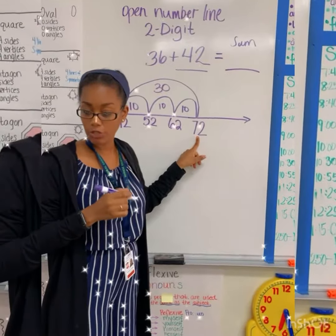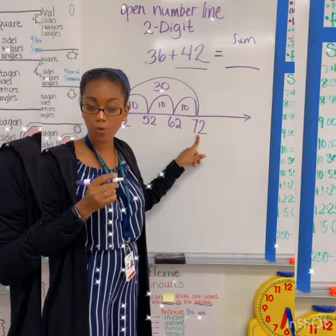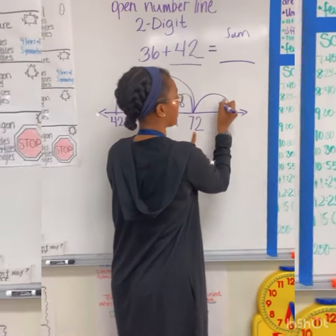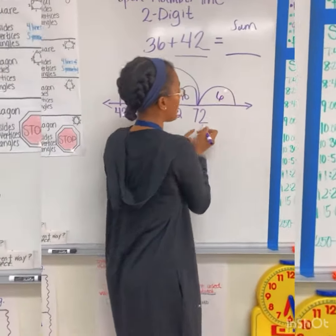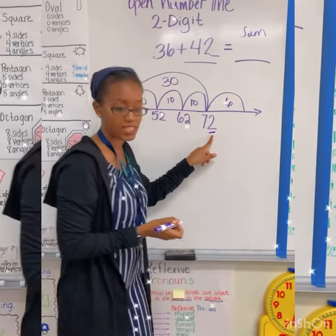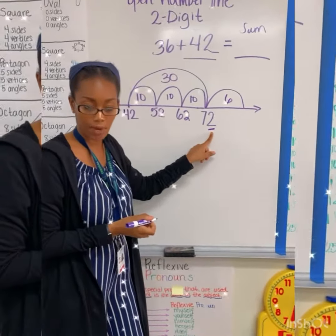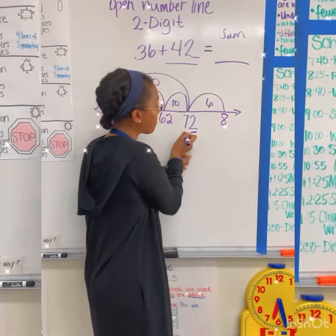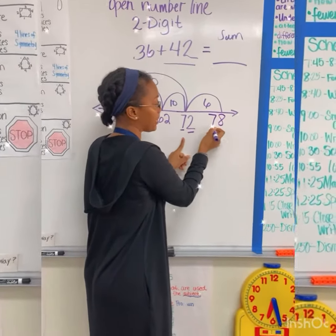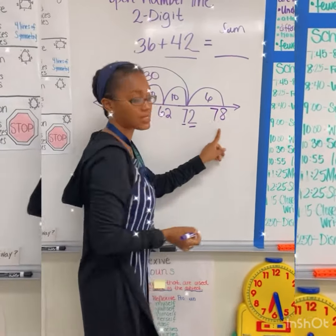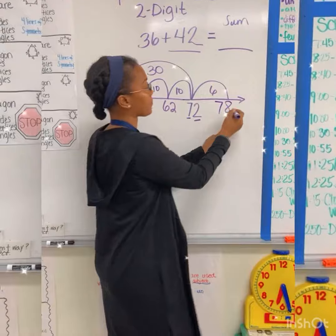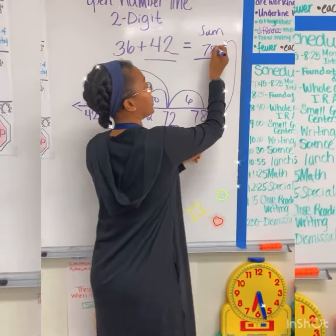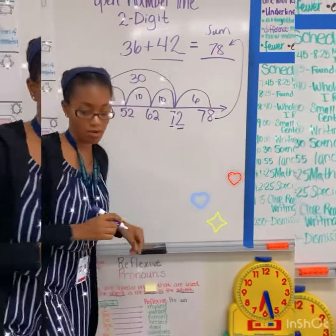Now that we have 72, how much more do we need to jump? 6! So I'm going to jump 6. If I add 6 to the 1s place, what's my new number? 8! Now I'm going to go ahead and add back the 7 from my 10s place, so my sum is going to be what? 78! My sum is 78, very good.